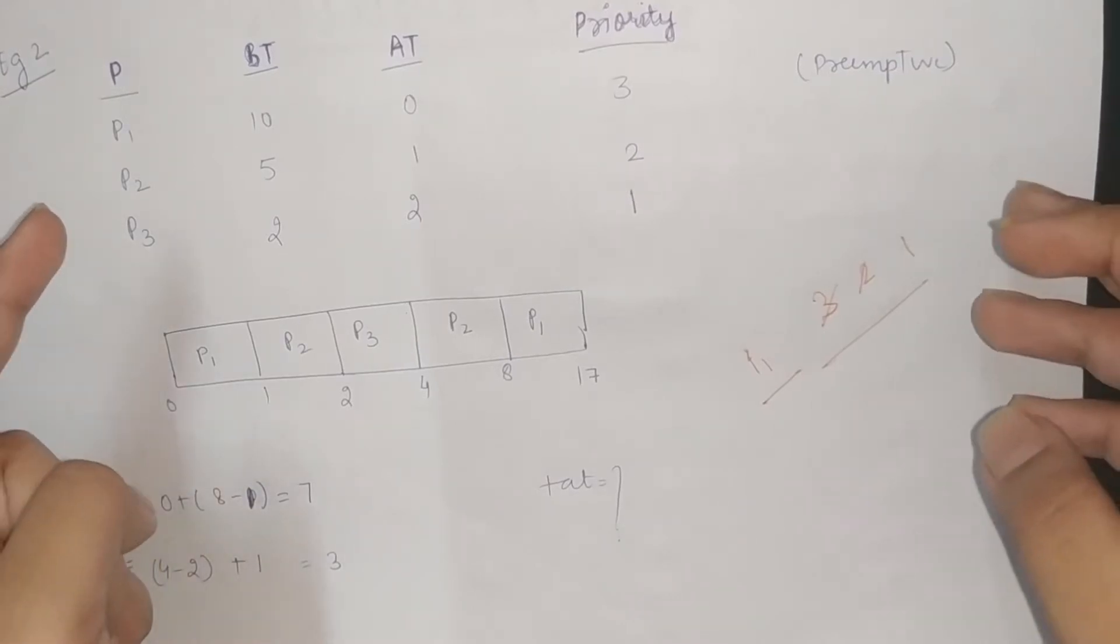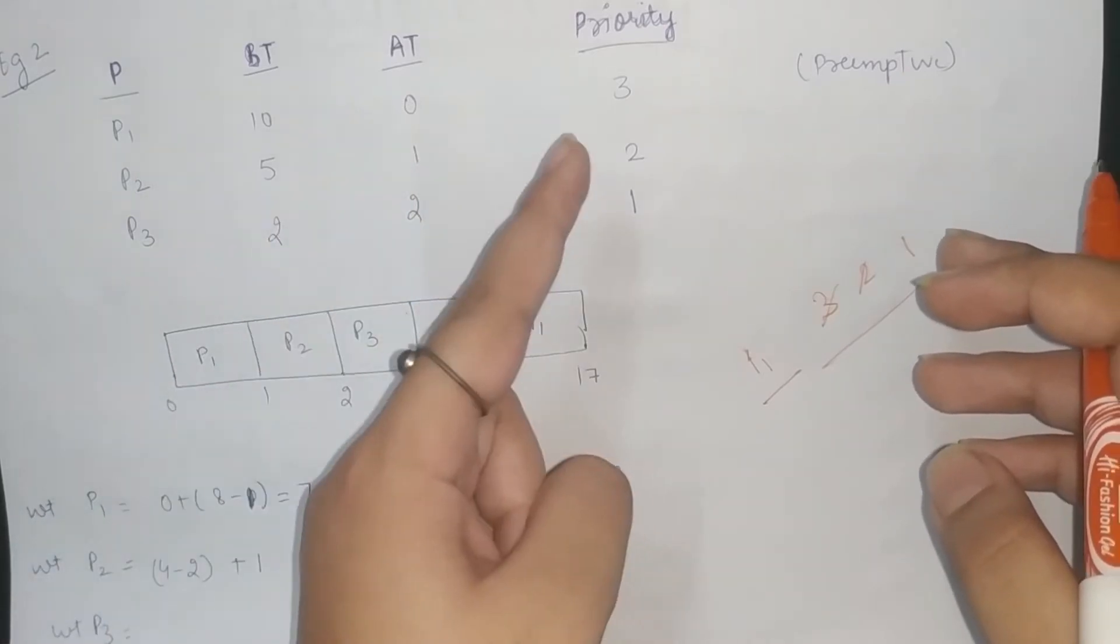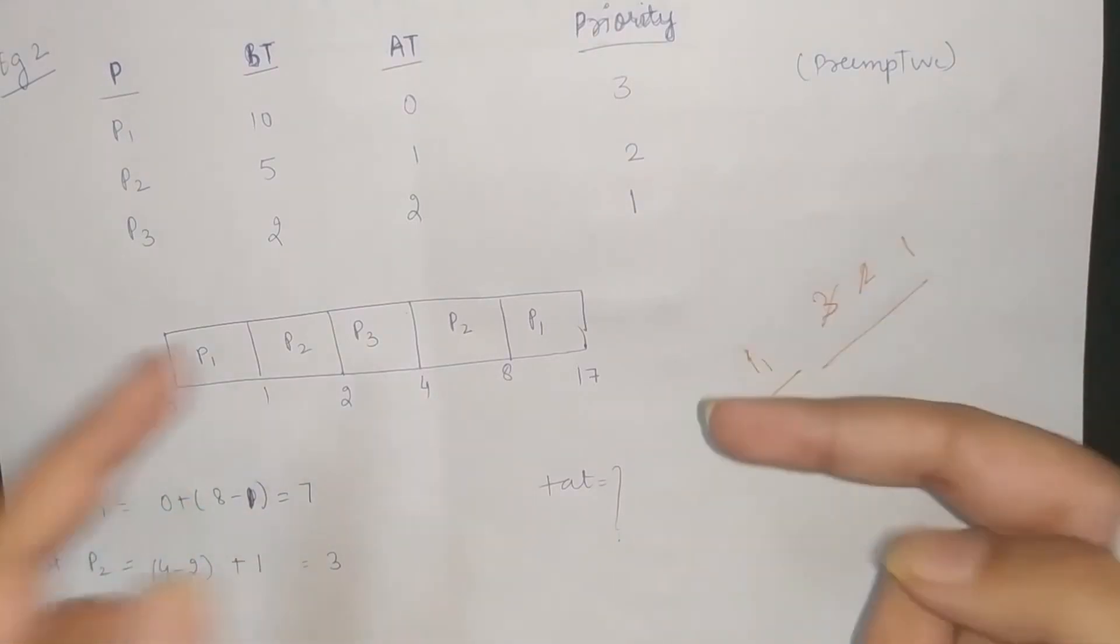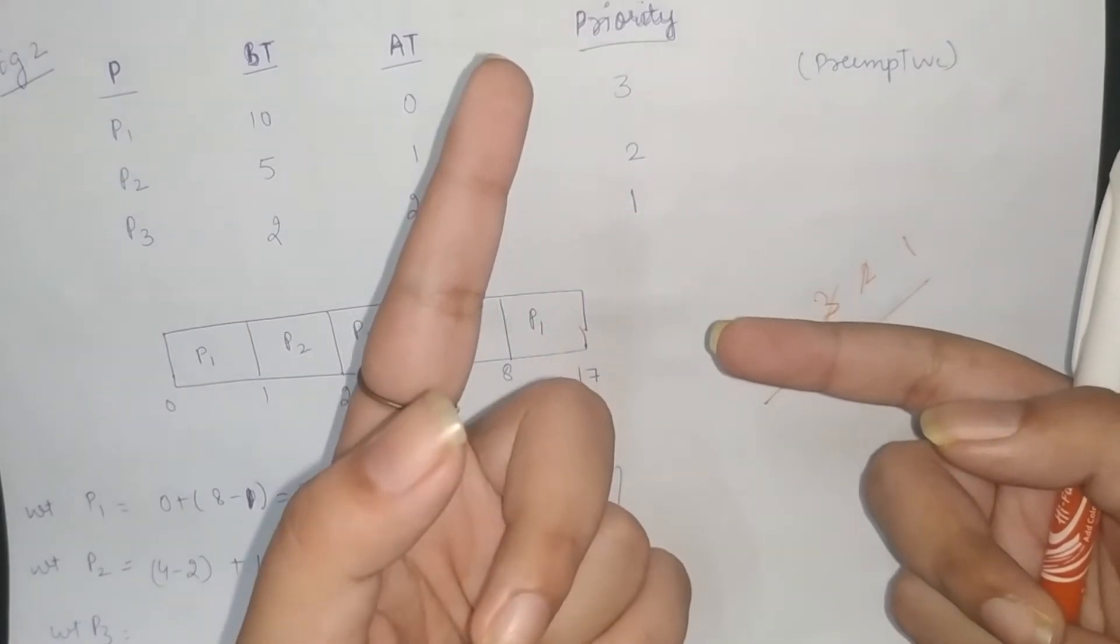So, the processes given are P1, P2, P3 with burst time 10, 5, 2; arrival time 0, 1, 2; and priority 3, 2, 1. Here also, I will use the priority where the least number is given the highest priority. So P3 will be the first priority, P2 second, and P1 is the third.